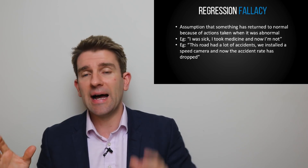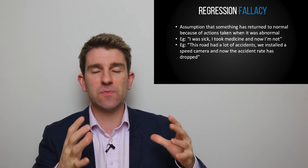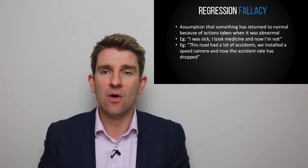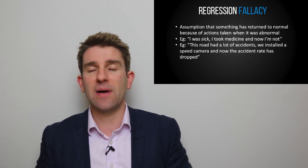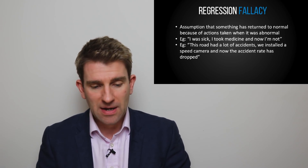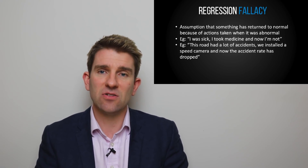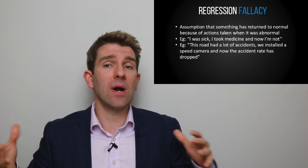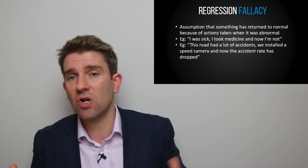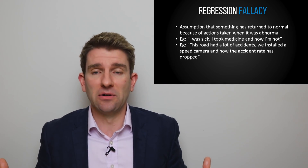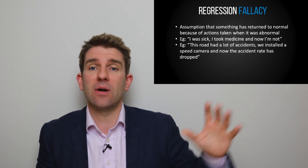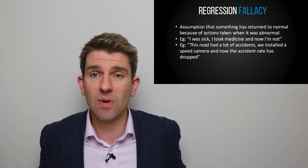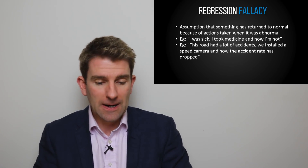Another example: there's a road with a lot of recent accidents, so the council puts up a speed camera. Accidents then drop back to previous levels and the council pats themselves on the back. In fact, the accident rate may have dropped simply because there was a natural spike over that period. Roads have spikes and troughs in accidents that go with weather, behavior, and luck — like tossing a coin. That could also be a regression fallacy.